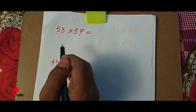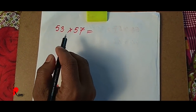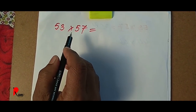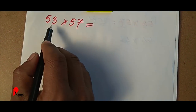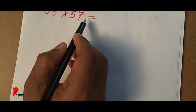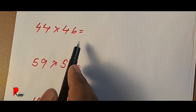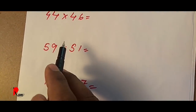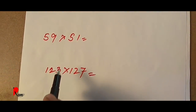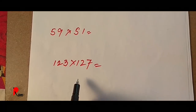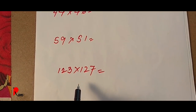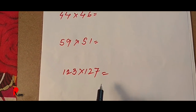So now we have 3 cuttings. Multiplication: 53 into 57, and 44 into 46, 59 into 51 — that's 1, 2, 3 into 1, 2, 7.